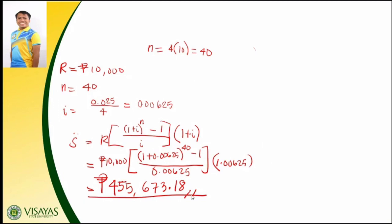To review: 1.00625 raised to 40, minus 1, divided by 0.00625, times 1.00625, times 10,000 equals 455,673.18. So the amount in the fund at the end of 10 years is 455,673.18 pesos. Meaning, if you are the father depositing 10,000 quarterly for 10 years, your money will grow to 455,673.18 — that's almost half a million — if the money is worth 2.5%. The secret is to find a bank offering a higher interest rate so you can earn a higher amount.